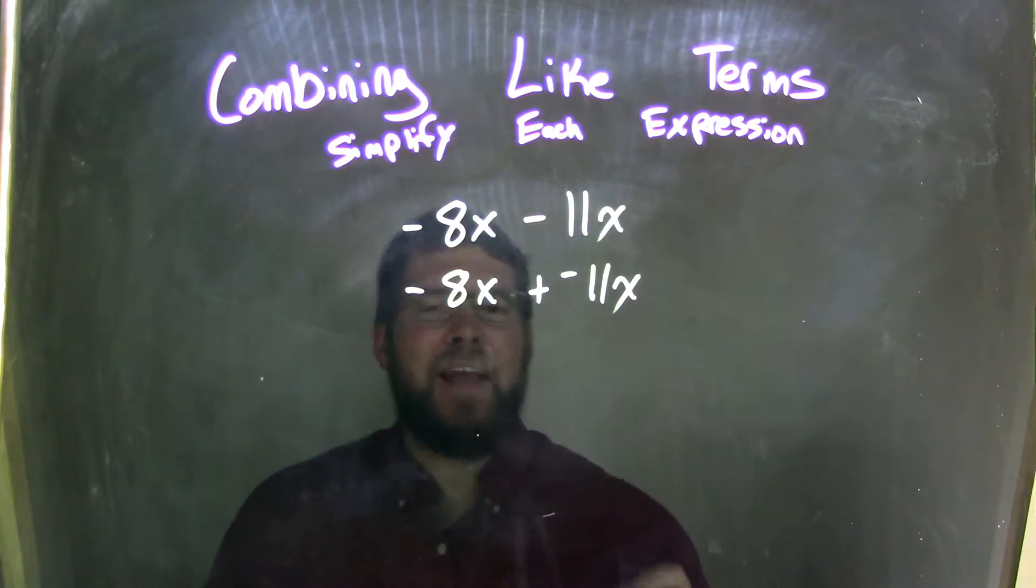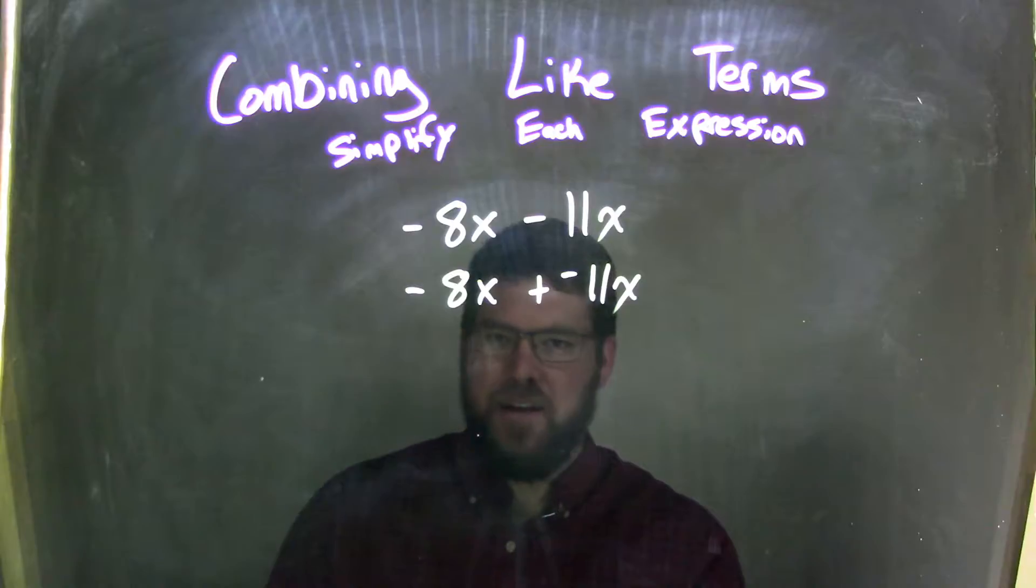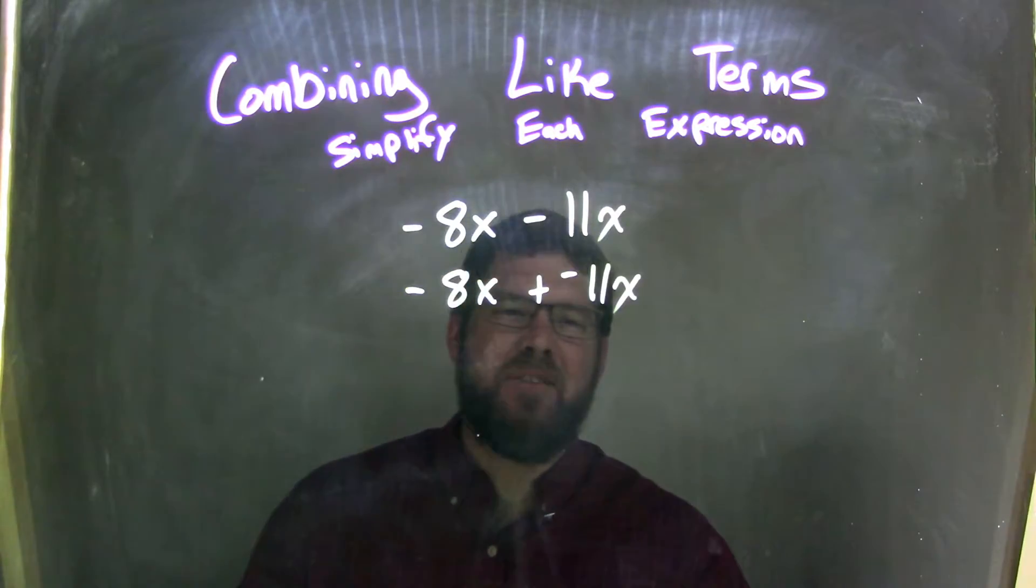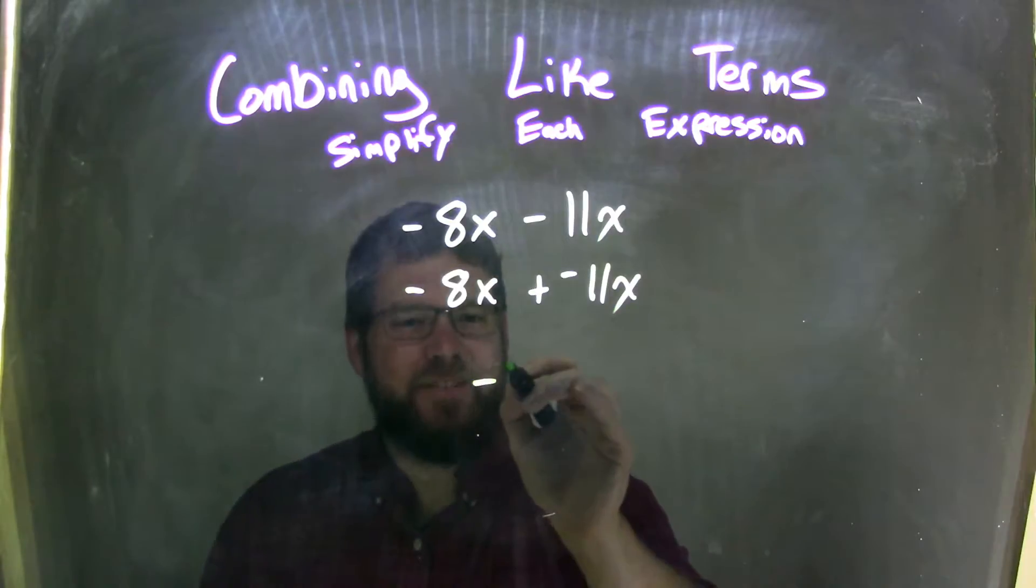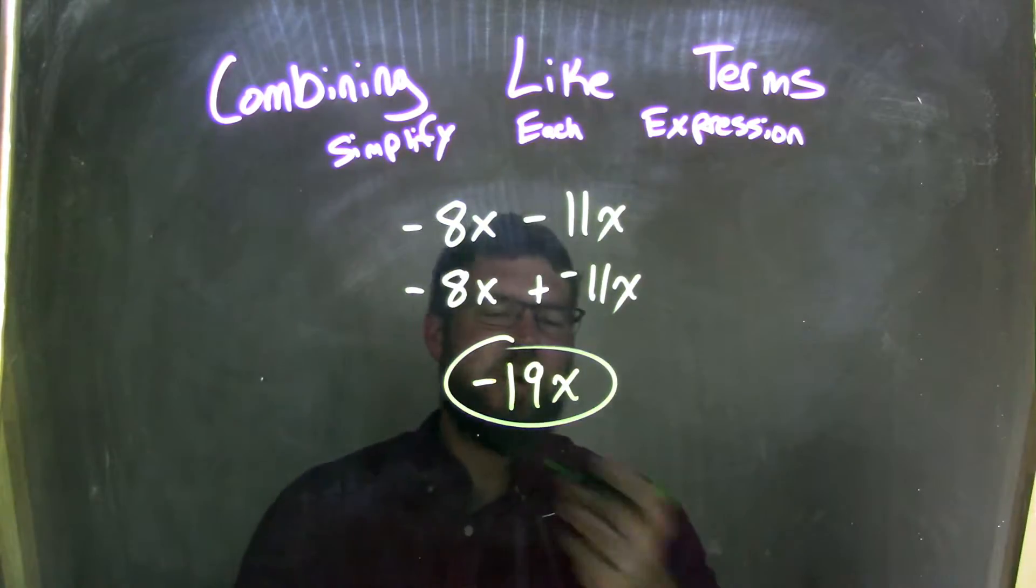That negative 8x plus negative 11x is more in that negative direction, and so just like 8 plus 11 is 19, negative 8 plus negative 11 is negative 19. And so therefore, negative 8x plus a negative 11x is a negative 19x, and that is our final answer. There's no other terms to combine.